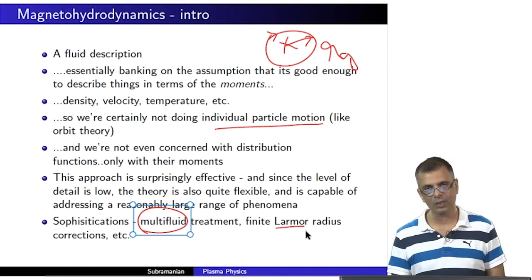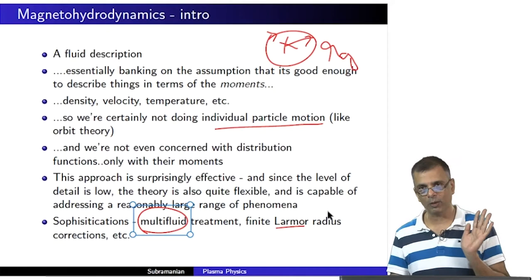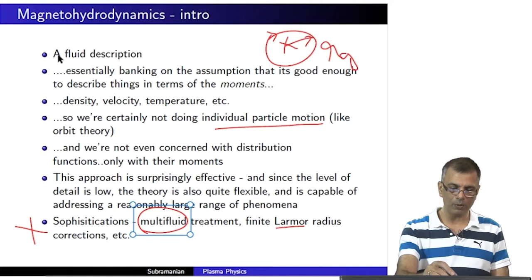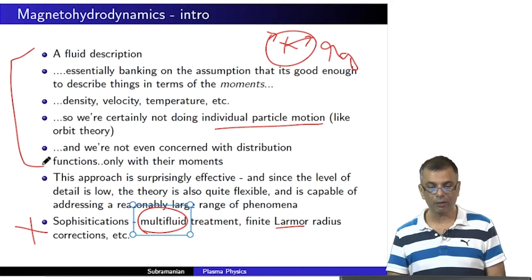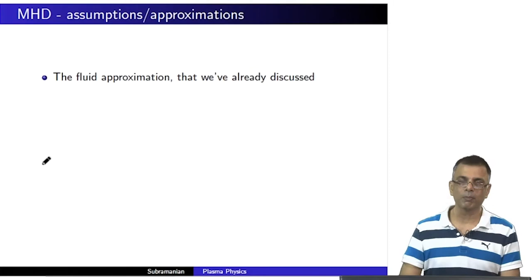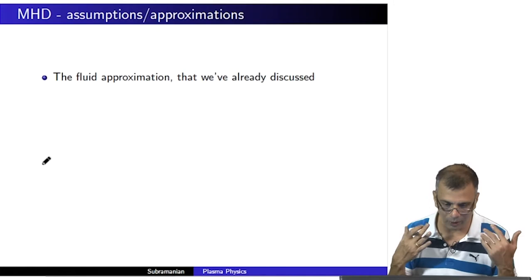When doing pure magnetohydrodynamics, there can be a higher level of sophistication where we account for the fact that the Larmor radius is non-zero — these are called finite Larmor radius corrections. These are higher-level treatments; I just wanted you to be aware of them. We will not be doing any of these. We should be very well aware of the basic assumptions and approximations before going ahead.